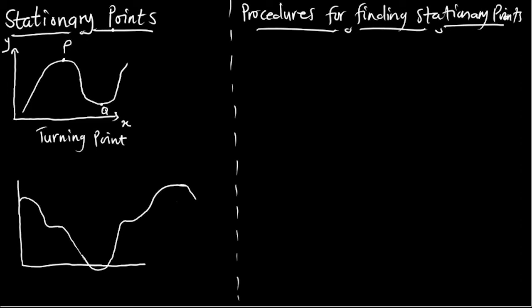Hello, welcome to Einstein Mechanics. In this tutorial we are going to tackle stationary points. It's quite interesting and it's one of the applications of differentiation. Looking at a curve plotted within the X-Y plane, there is a point P with coordinates X and Y where the curve begins to turn, and a point Q where the curve begins to turn again. These points are called stationary points.